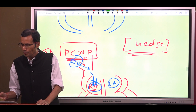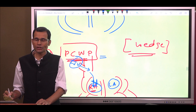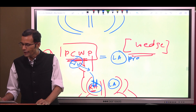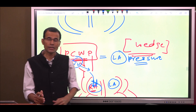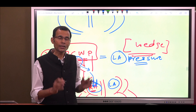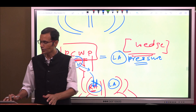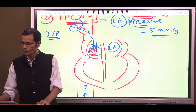Pulmonary capillary wedge pressure is reflective of the left atrial pressure. When we are measuring pulmonary capillary wedge pressure, we are actually measuring the left atrial pressure, and it is in the range of about 5 mmHg.